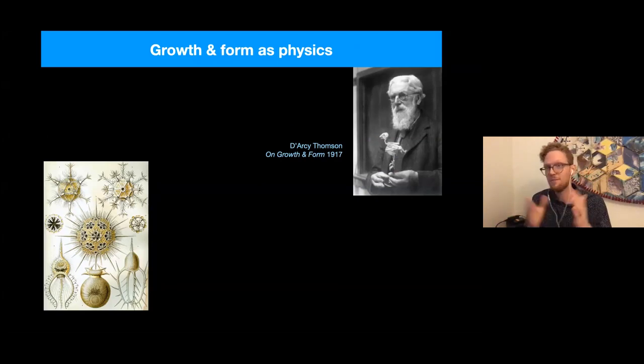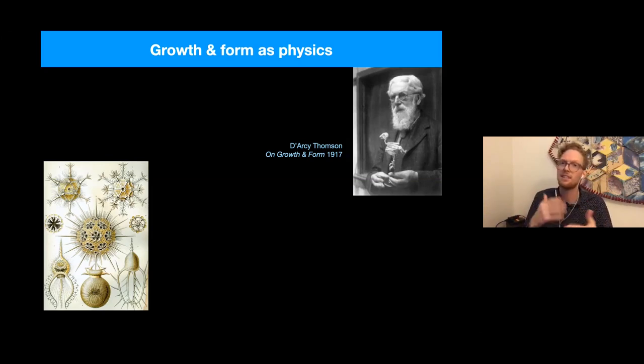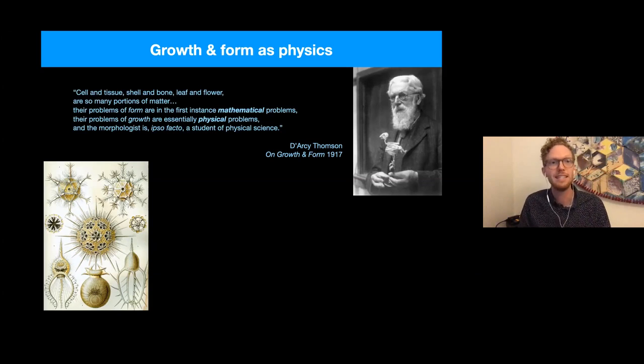In fact, already a century ago, there was a zoologist named D'Arcy Thompson, who had this fairly revolutionary vision of how to understand biological forms. Thompson looked to physics and mathematics, not merely to describe, but also to explain how physical phenomena might determine biological structures. So he writes in this book from 1917, cell and tissue, shell and bone, leaf and flower are so many portions of matter, their problems of form are in the first instance mathematical problems. Their problems of growth are essentially physical problems. And the morphologist, that is the person studying morphogenesis, is ipso facto a student of physical science.